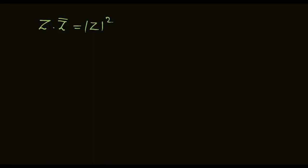Hello students, today we are going to discuss one important property of complex numbers: z into z conjugate equal to modulus of z whole square. Let z equal to a plus iota b, conjugate of z equal to a minus iota b.